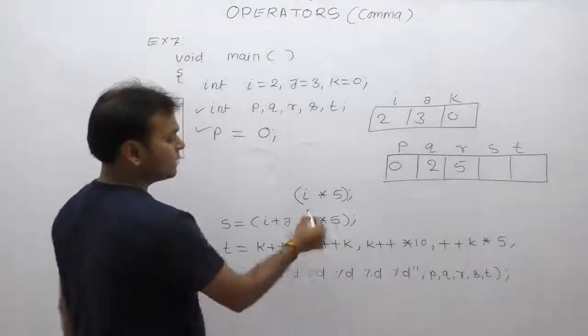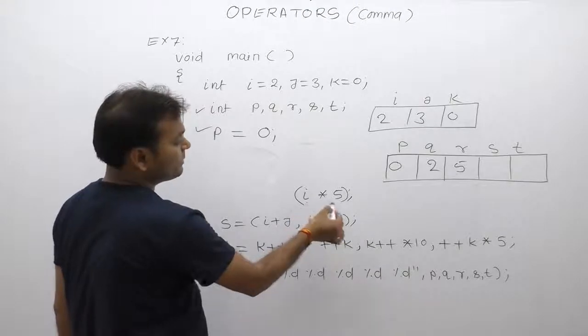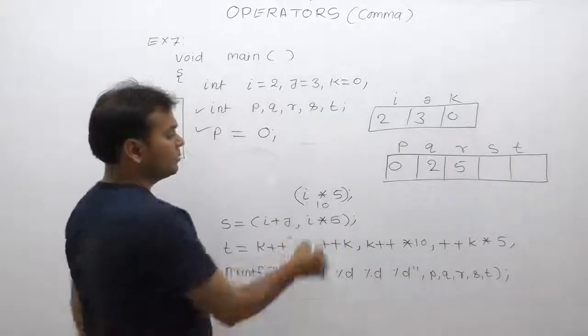Then solve that expression. i times 5. i is 2, 2 times 5 is 10, but doesn't have any effect.